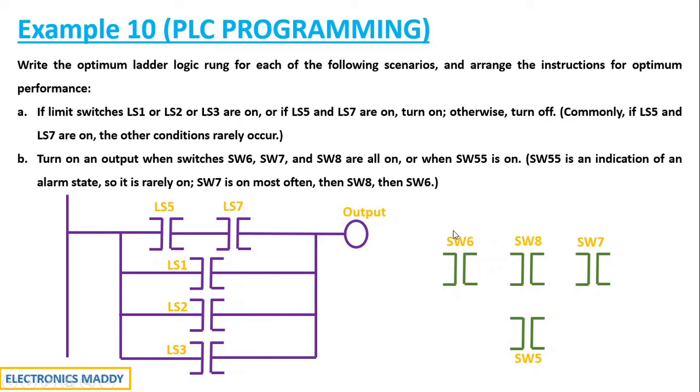And they've mentioned S7 is mostly on then S8 then S6. If you carefully observe, I placed it in a specific order S6, S8 and then S7. This is the order that you have to follow for optimum ladder condition. Why is that so? Because they mentioned S7 is mostly on then S8 is mostly on then S6. That means S6 has the least condition of it being on. I will first complete the circuit. This is the input and this is the output.